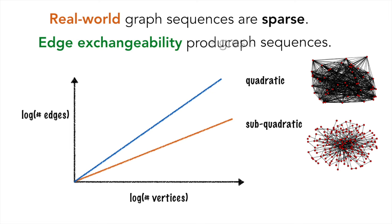We introduce edge exchangeability, a framework for probabilistic modeling that can produce sparse graphs.